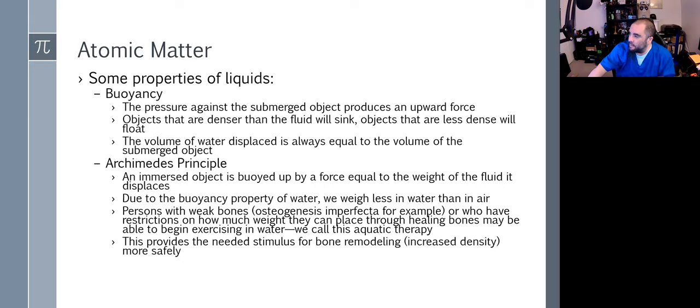We also have the proposition of buoyancy in water. Buoyancy is the pressure against a submerged object, and we think of it as the ability to float. Objects that are denser in fluid will sink. Objects that are less dense will float. Objects with more muscle mass will sink. Objects with more adipose tissue will float. The volume of water displaced is always equal to the volume of submerged objects. When we get in a pool, we change the volume of fluid in the pool because we have taken up space.